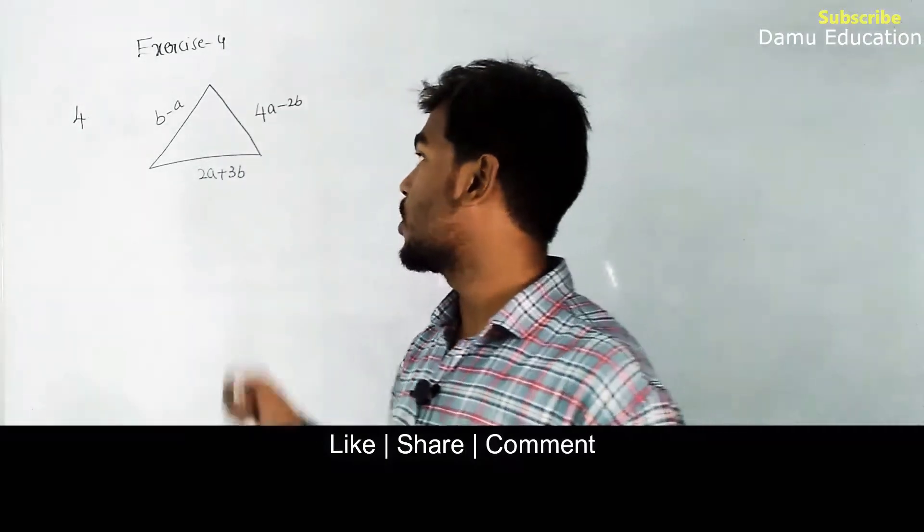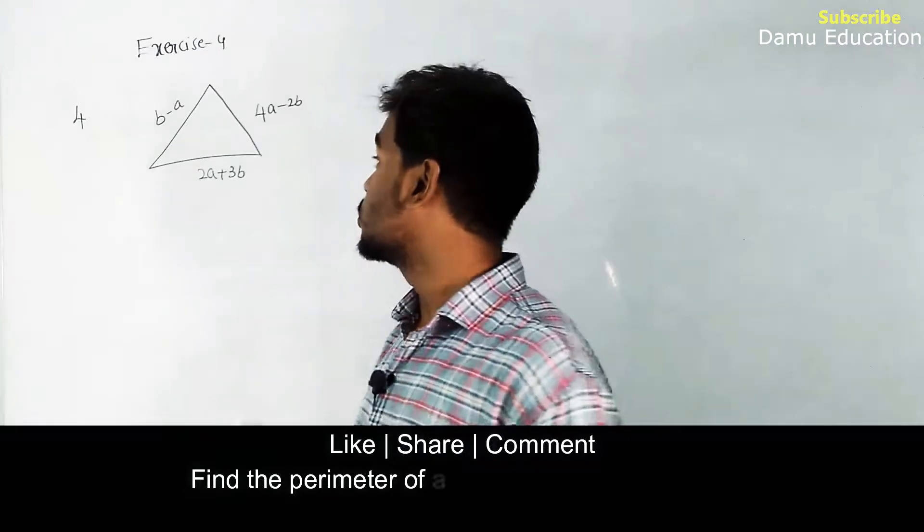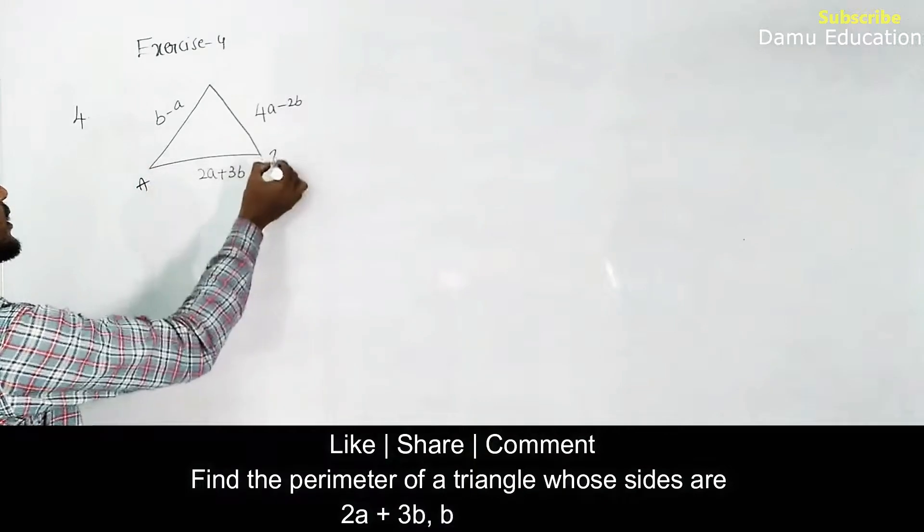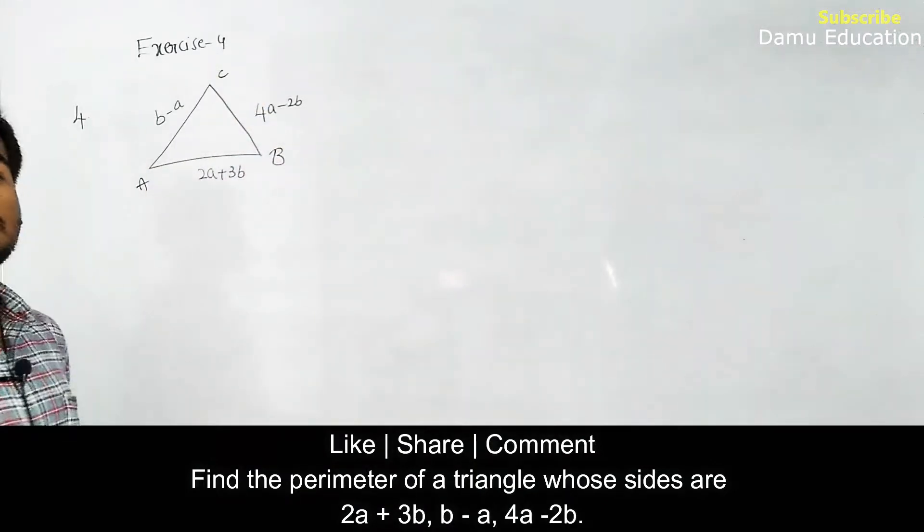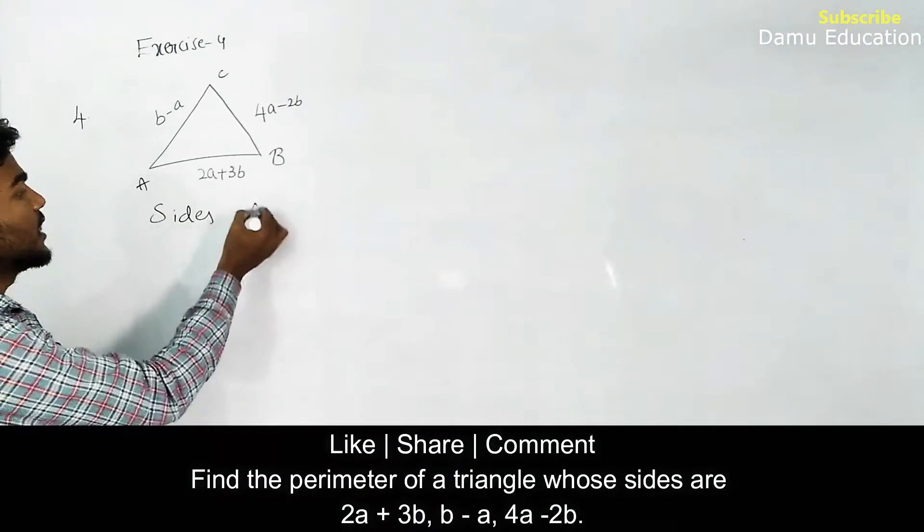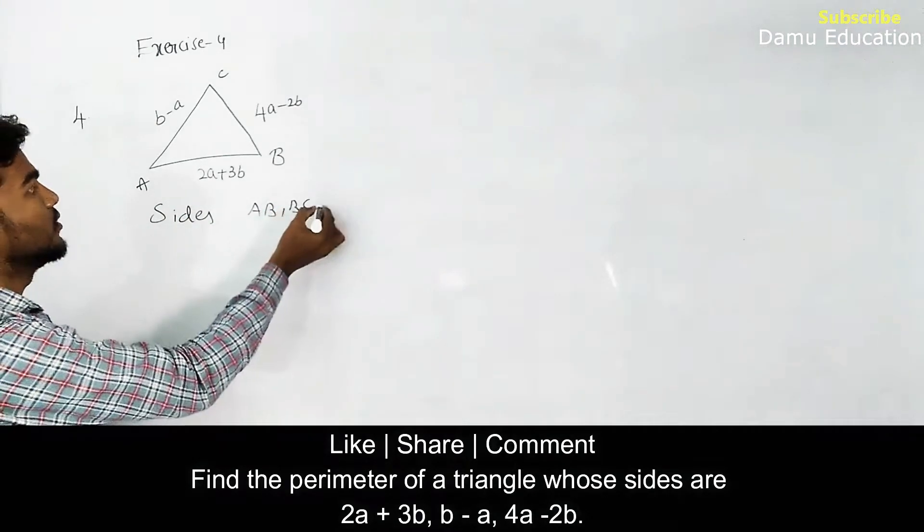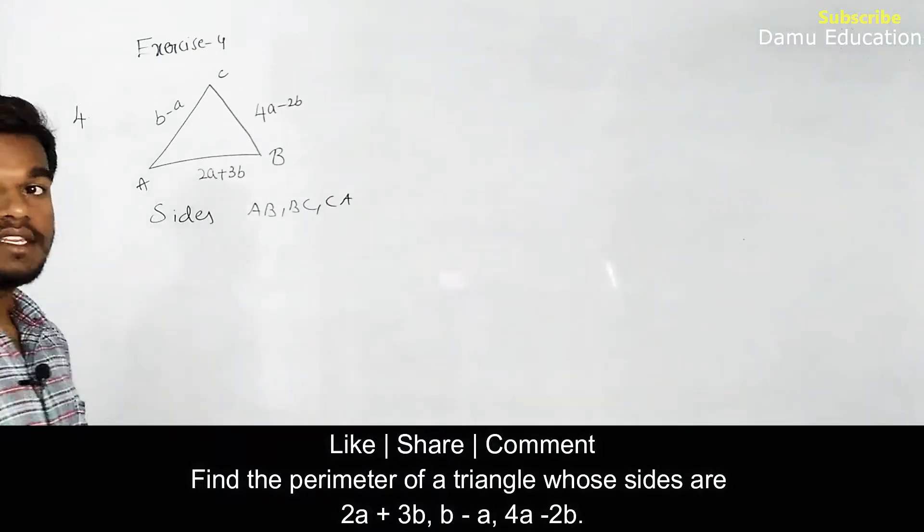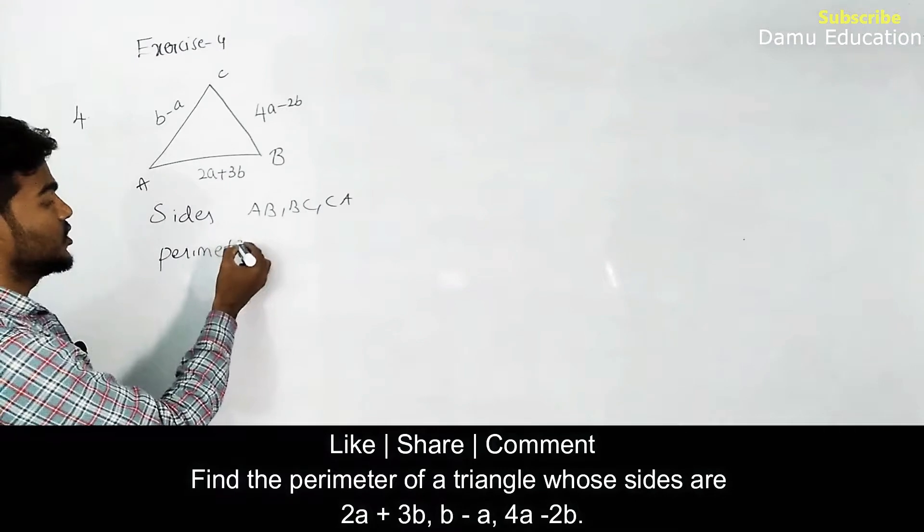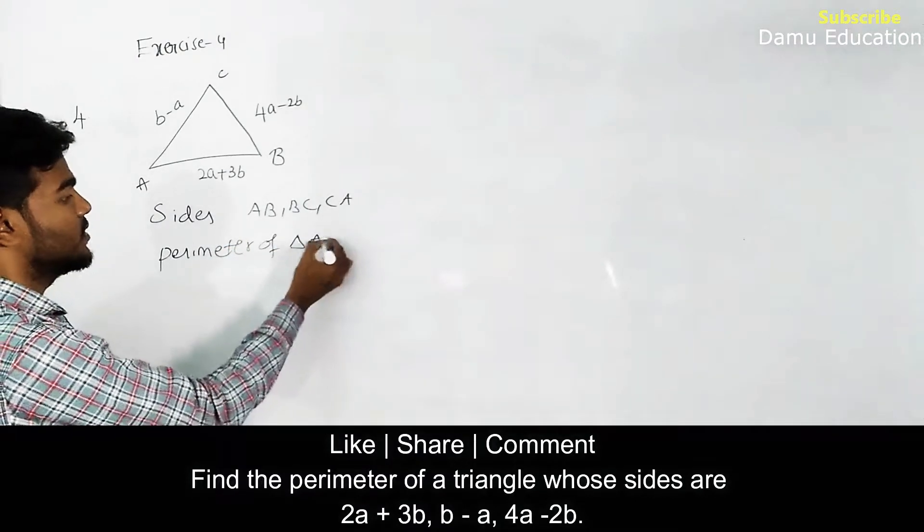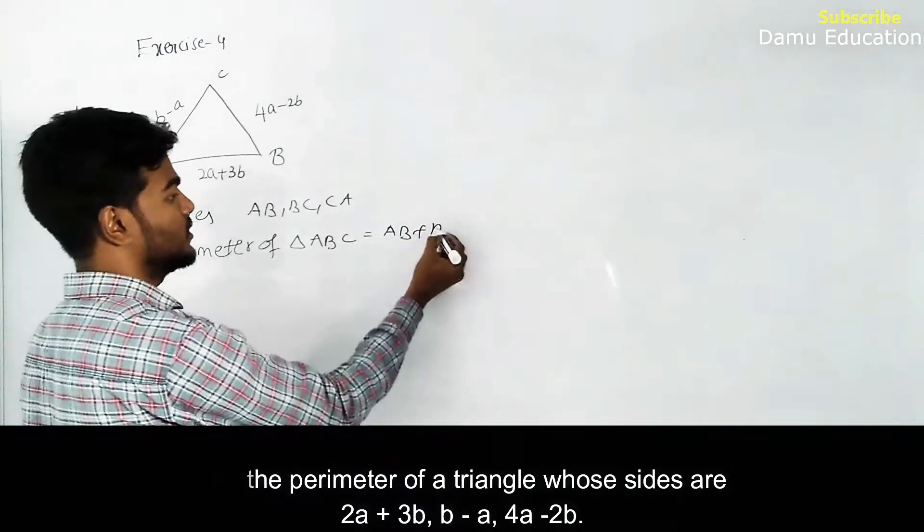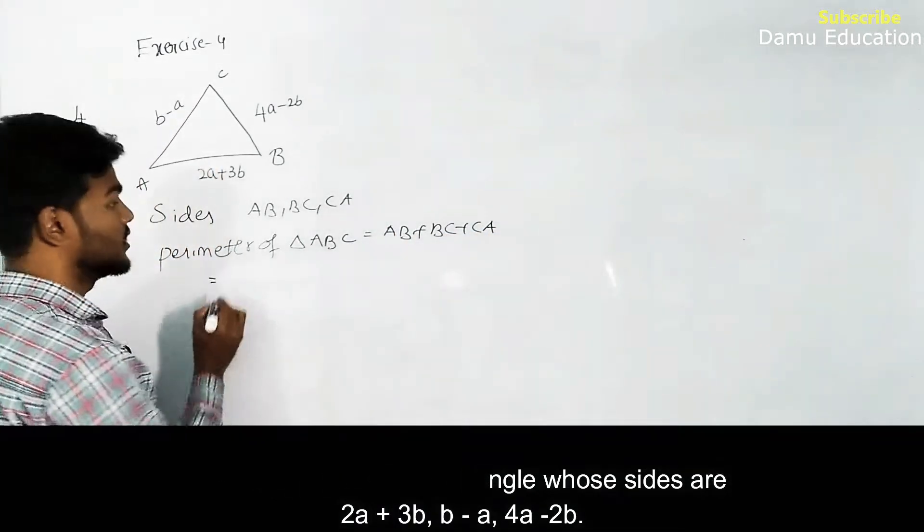In this module we are going to discuss how to find the perimeter for a given triangle. So here what's the formula? Let's take triangle ABC. The sides are given: AB, BC, CA, with expressions. Perimeter of triangle ABC will be equal to AB plus BC plus CA, sum of all the sides.